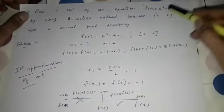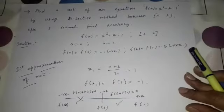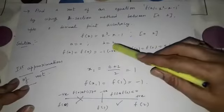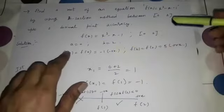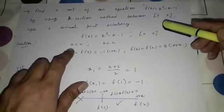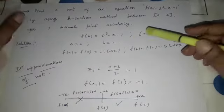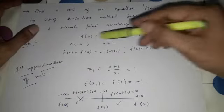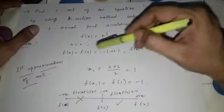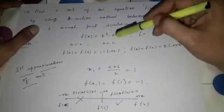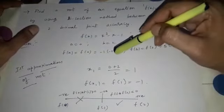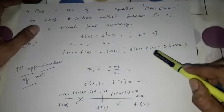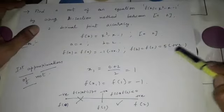So f(x) = x³ - x - 1. The lower limit a = 0 and the upper limit b = 2. Let us verify whether a root exists between 0 and 2 by applying the intermediate value theorem. f(0) = 0³ - 0 - 1 = -1, which is negative.